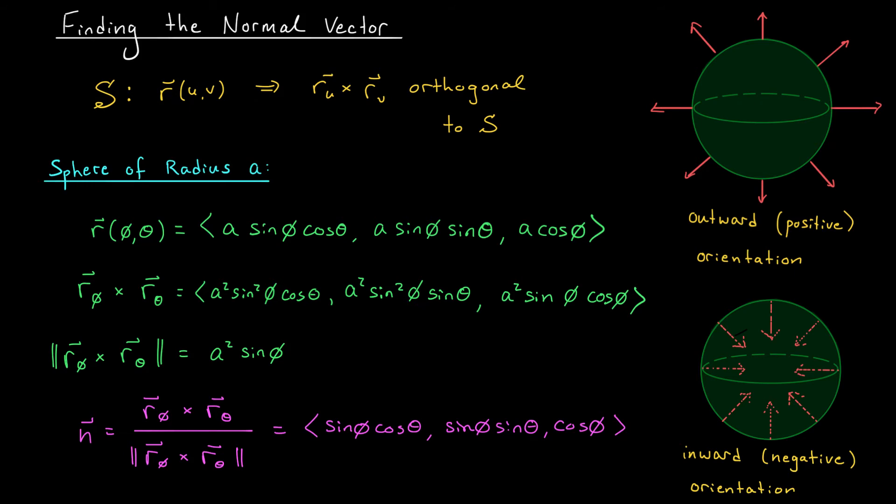If we parameterize the sphere using spherical coordinates, then as we saw in a previous example, the cross product of r_phi and r_theta is given by this nasty vector here. And its norm is a squared sine phi. You're welcome to use these facts without re-deriving them every time. It's a real pain in the butt. So if we're looking for a unit normal vector to our sphere, we can use the cross product divided by its norm. That gives us the vector sine phi cos theta, sine phi sine theta, and cos phi.